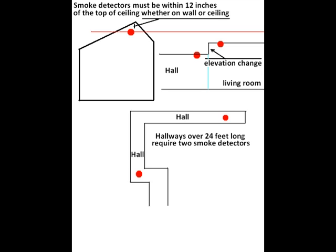You look at the second diagram to the right and you see hall, an elevation change. When you have an elevation change of 12 inches or more, you have to have another smoke detector. In this case, the smoke detector is in the living room, which it wouldn't matter if there was an elevation change or not. You would still have to have a smoke detector.